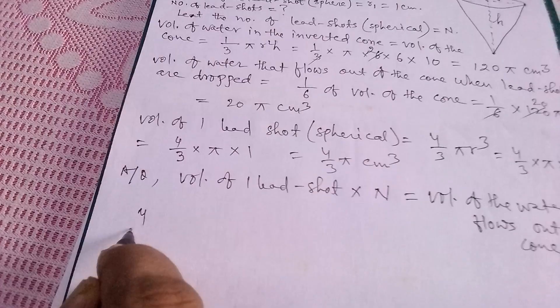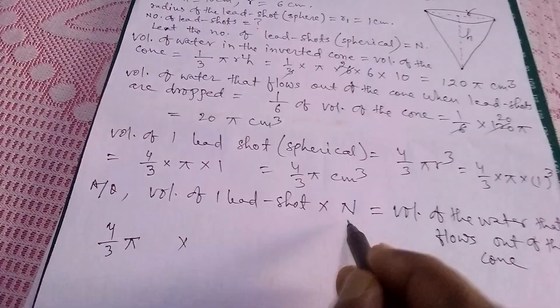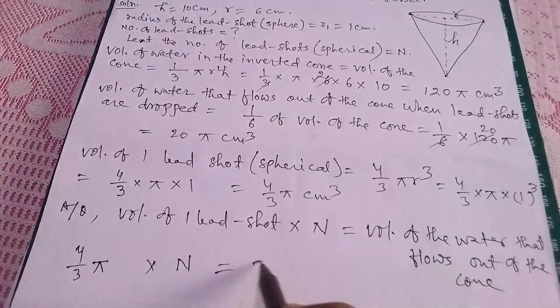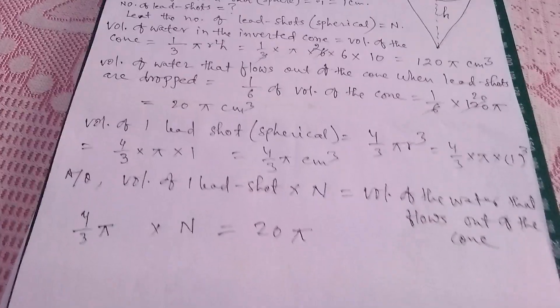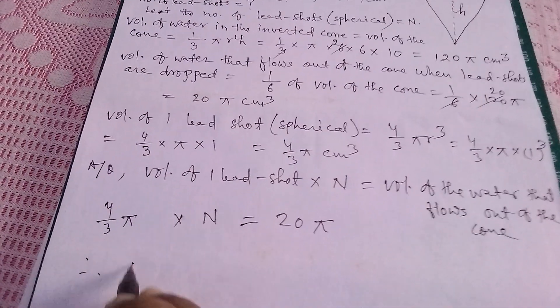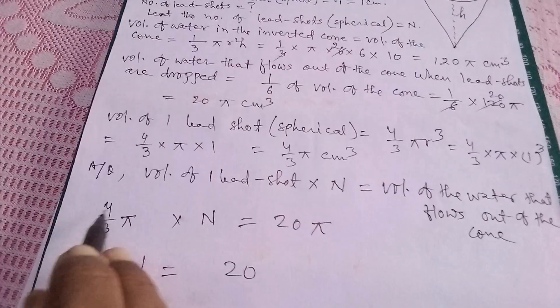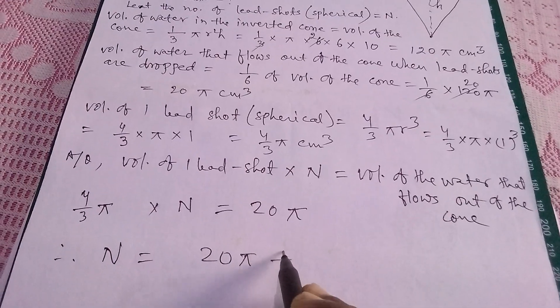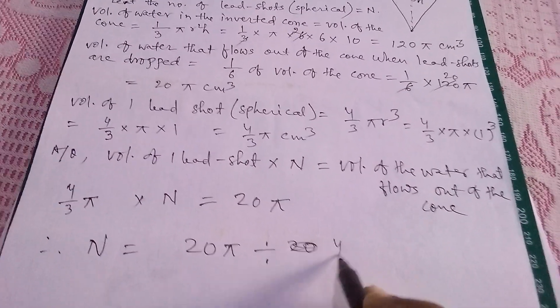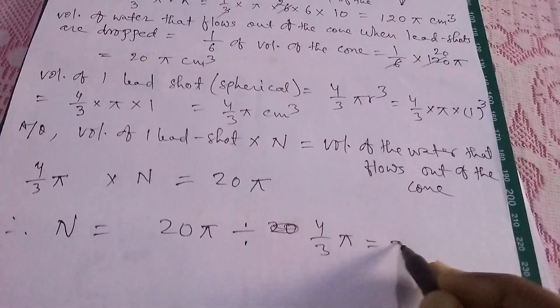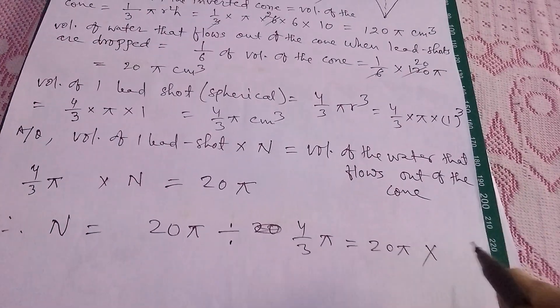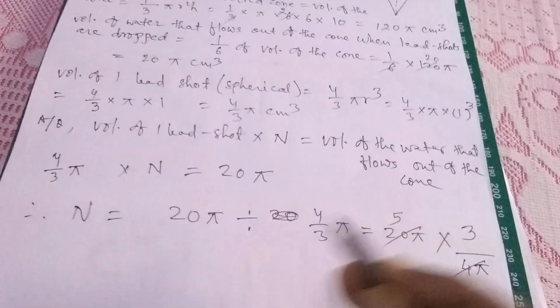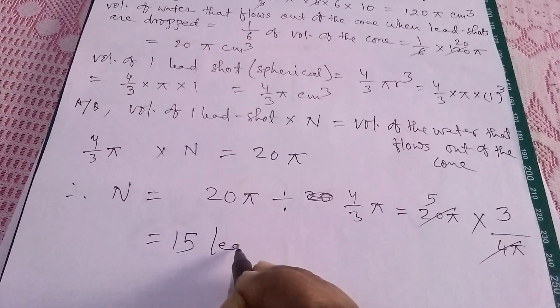So volume of one lead shot is 4/3 π into capital N, and that is equals to volume of water that is flowing out is 20π. Therefore, N is equals to 20π. This total will come this side, that means this 20π is divided by 4/3 π, and that is equals to 20π × 3/4π. This is cancelled and that is equals to 15 lead shots.